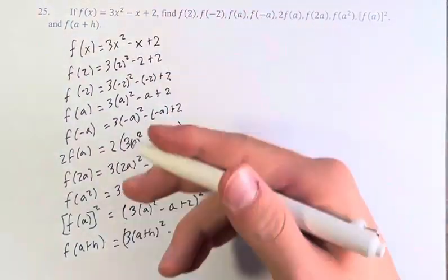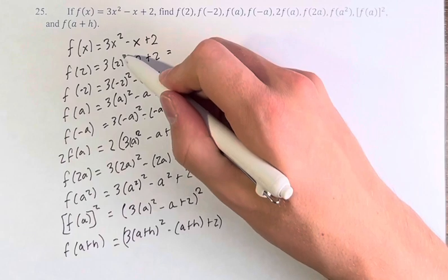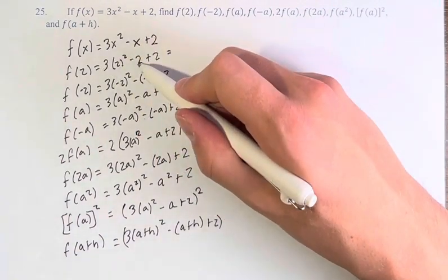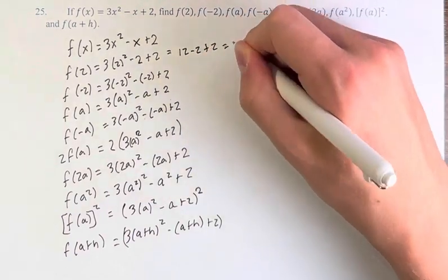And now, we have all of these, we just have to calculate them, to simplify them, basically. So 2 squared is 4, times 3 is 12, minus 2, plus 2, which is 12.